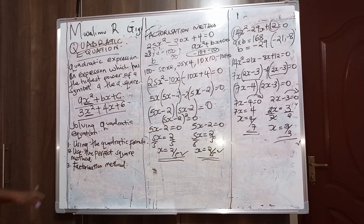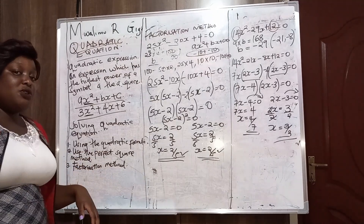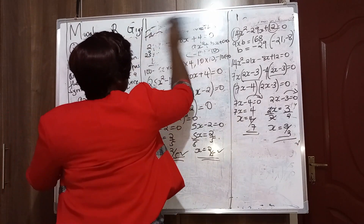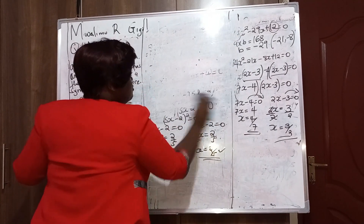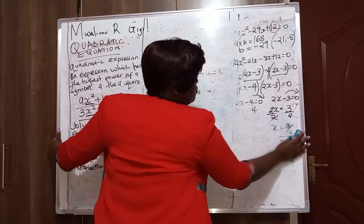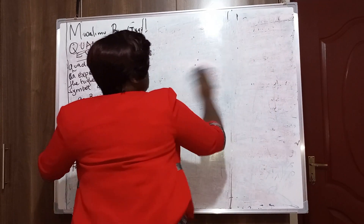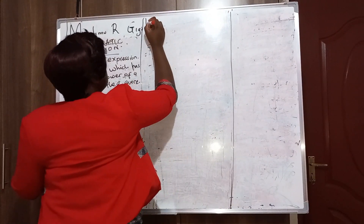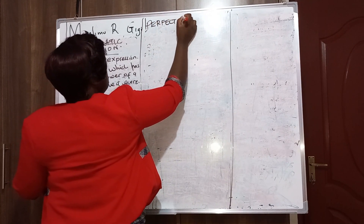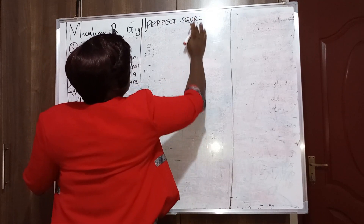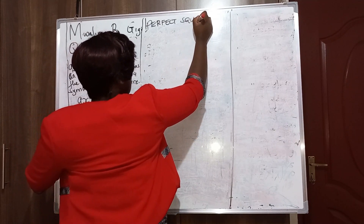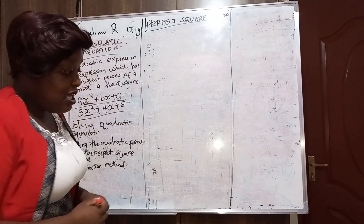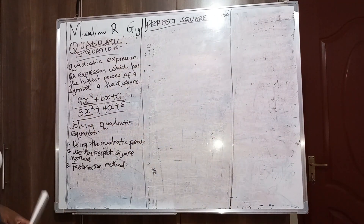We have covered the quadratic formula, the perfect square method, and the factorization method. We are done with the factorization method, so we now go to the perfect square method. We have a procedure for the perfect square method.